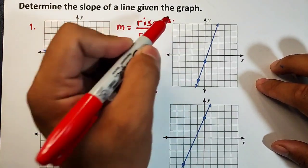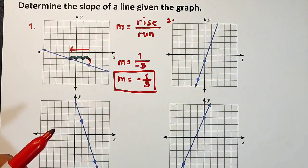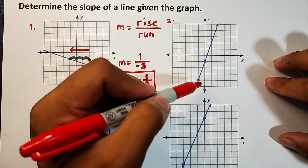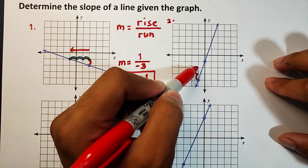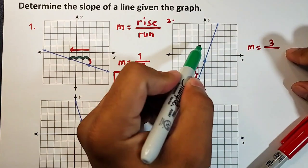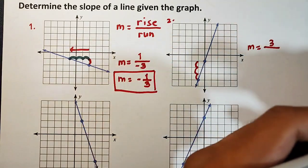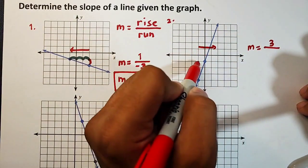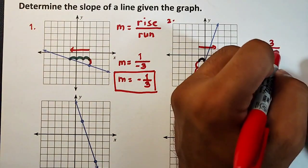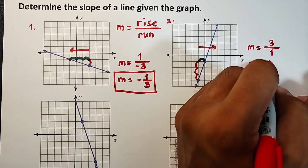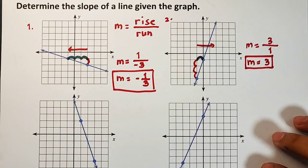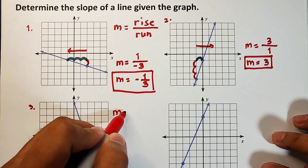For number two, this line has a positive slope. Counting the rise along the y-axis: one, two, three — rise equals three. For the run, we go from left to right, so it is positive. Counting: one unit — run equals positive one. So m equals three over one, which equals three. This is a positive slope, as expected.